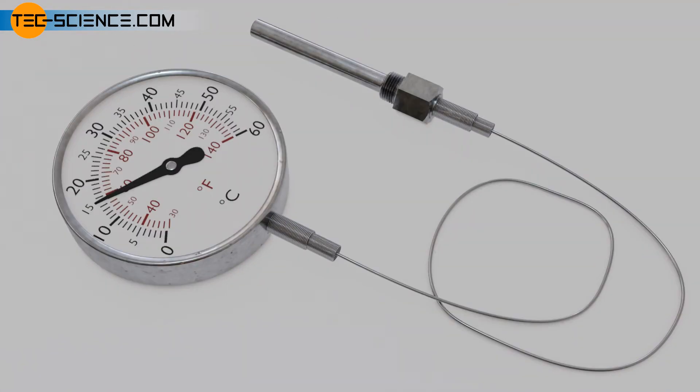Gas-filled thermometers can also be equipped with a flexible capillary tube for covering large distances. In the case of large heights to be covered, the relatively large overpressure in the measuring system minimizes the influence of the hydrostatic pressure on the measurement result.